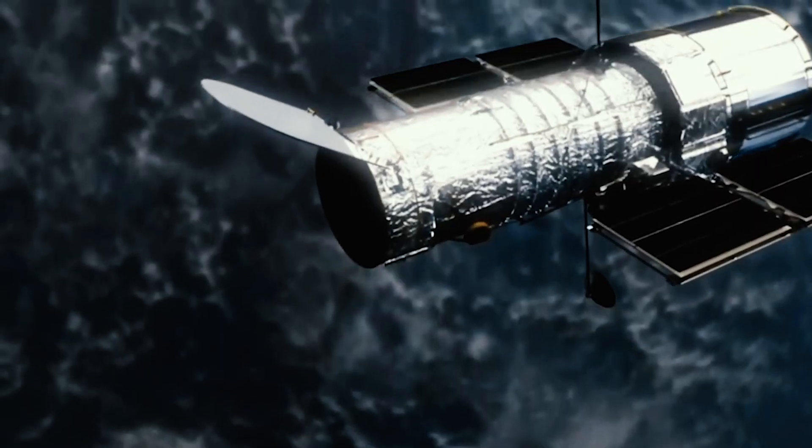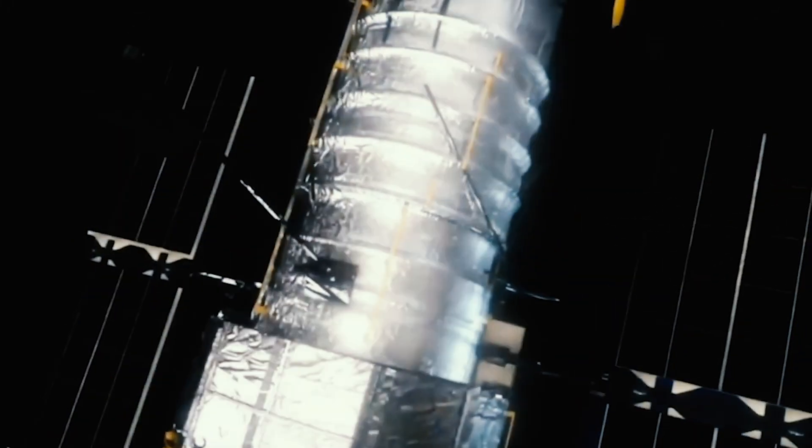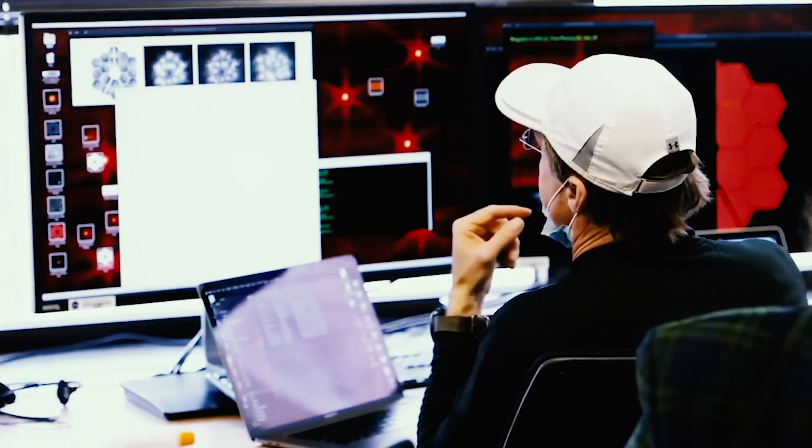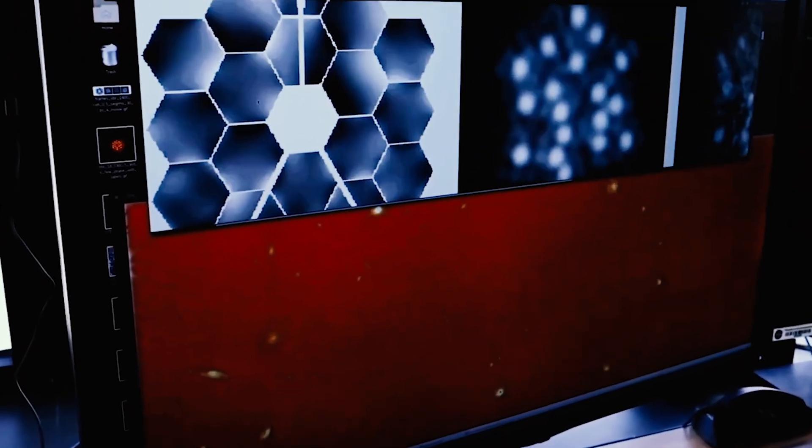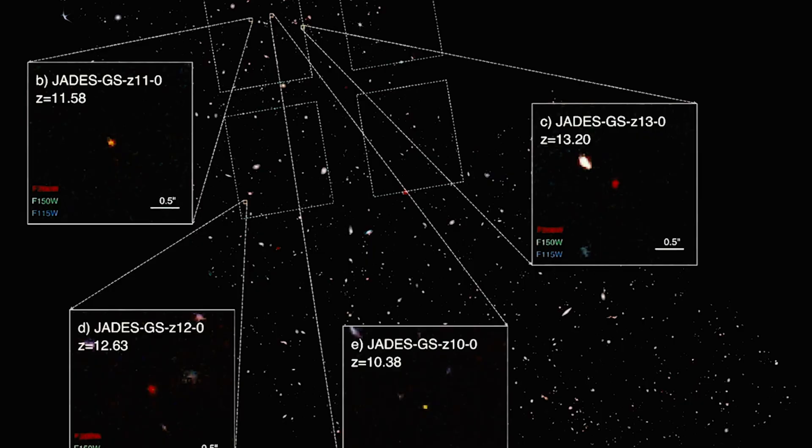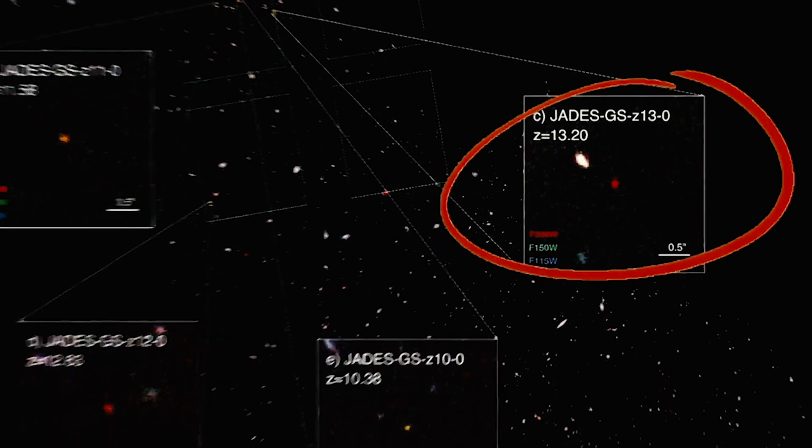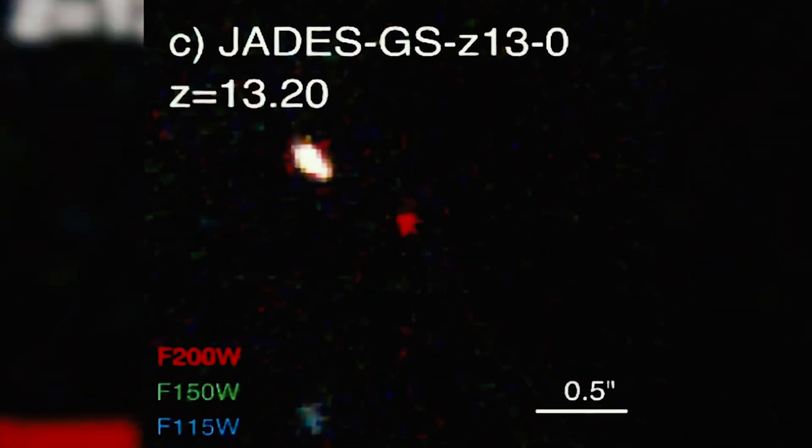Scientists have recently confirmed that four of the most distant galaxies are even older than the most distant galaxy observed by the Hubble telescope, shattering the previous record set by the Webb telescope's early observations. One of these galaxies, designated GS-Z13, was 325 million years after the Big Bang.